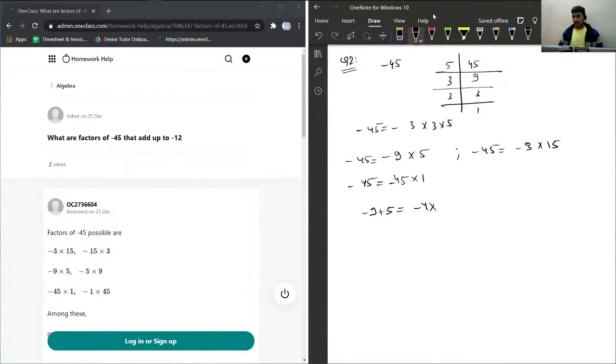I'll just write one more where it will be 3 into negative 15. In this case we can see that the sum of 15 and negative 3 is 12, but we need negative 12, so this is not the answer. In this case the sum will be minus 45 plus 1, this will become minus 44, and again this is not the answer.